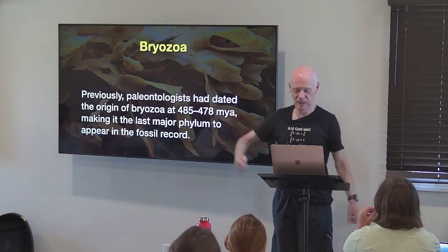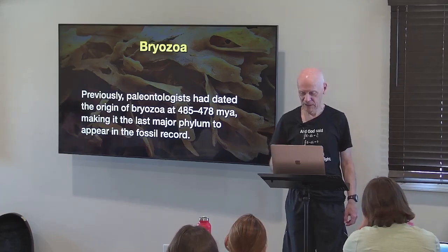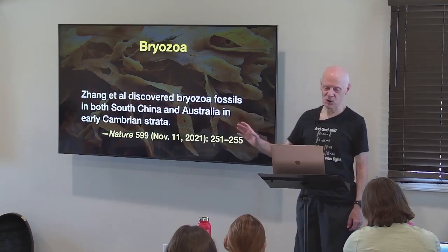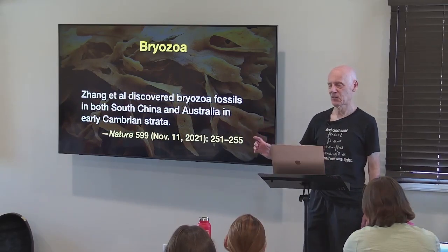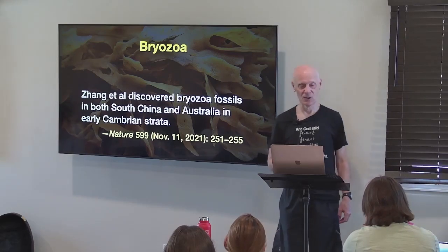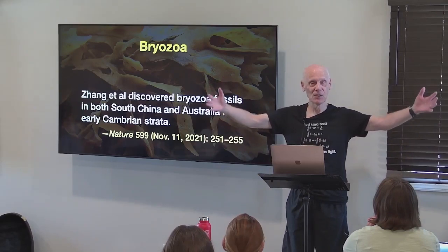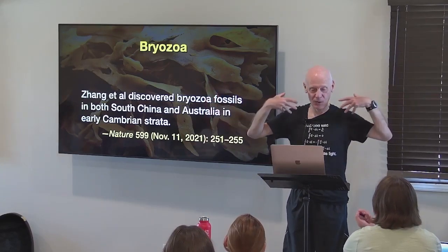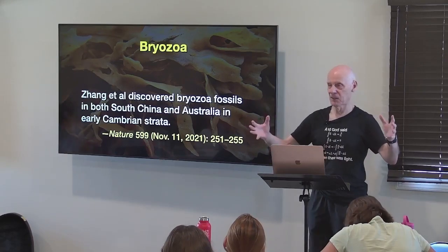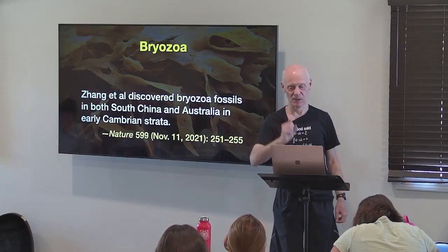Just about nine months ago, a team out of Australia and China discovered bryozoa fossils in both South China and Australia in the Early Cambrian. The new date is 538 million years ago — they're now at the very base of the Cambrian explosion. This means there is not a single animal phylum on earth today that we can't use fossils to prove was there at the beginning of the Cambrian explosion. All the phyla on earth today suddenly appeared at the beginning of the Cambrian explosion in a time window briefer than 410,000 years.